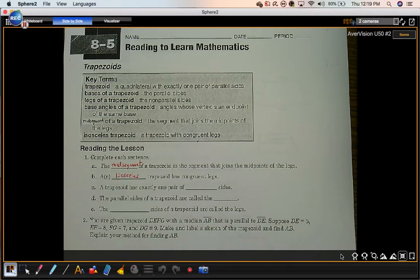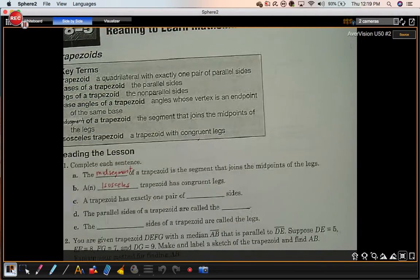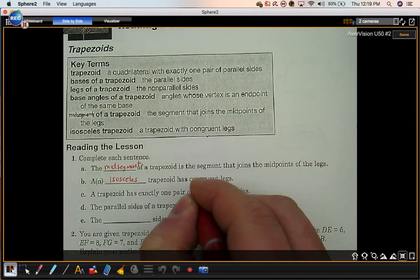Part C: A trapezoid has exactly one pair of blank sides. Parallel sides.